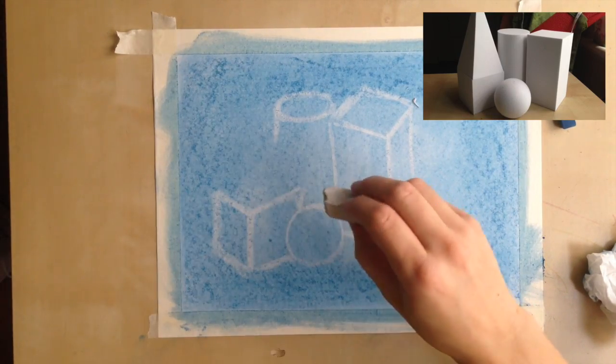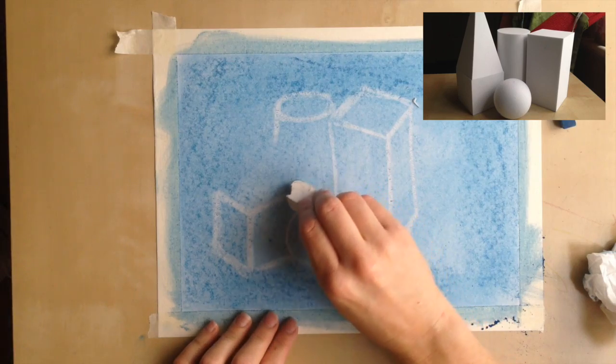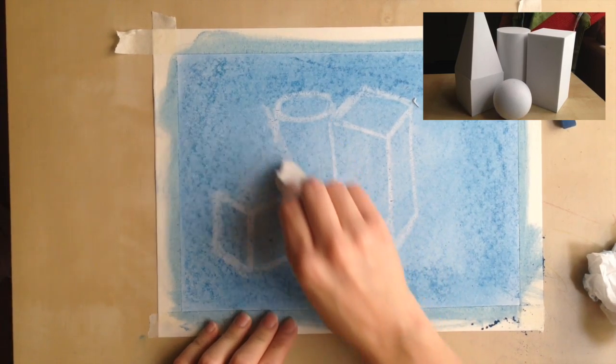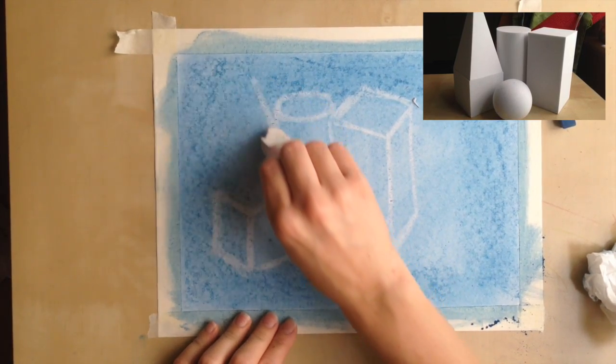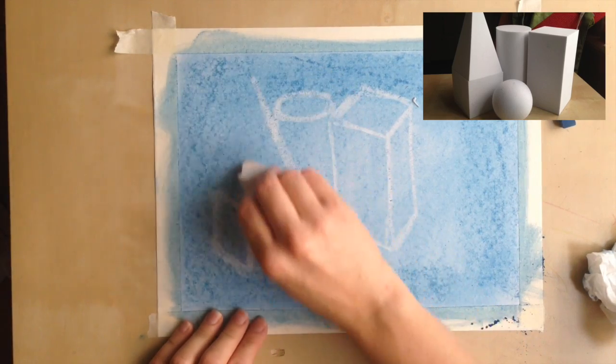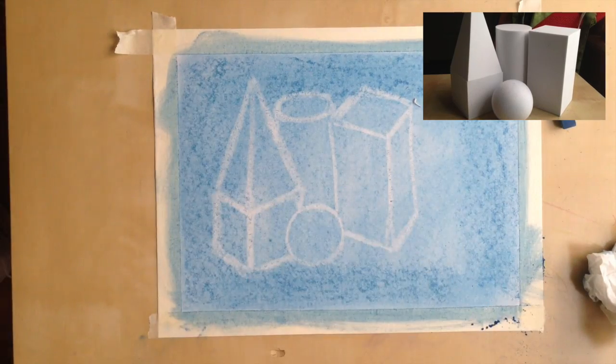This is where it can get a little tricky because we have this triangle pyramid thing on top of our block. And this is the highest part of our display. So we have our sketch.